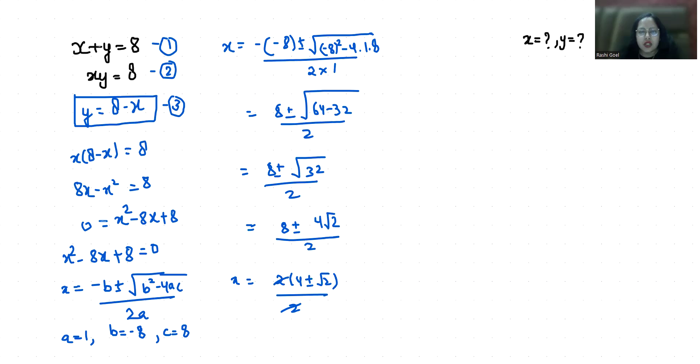So y1 is 8 minus 4 minus root 2, that is 4 minus root 2. Now y2.